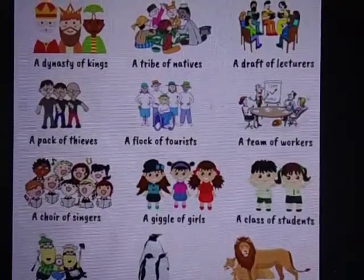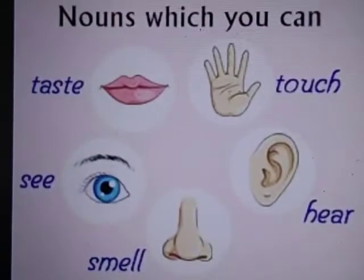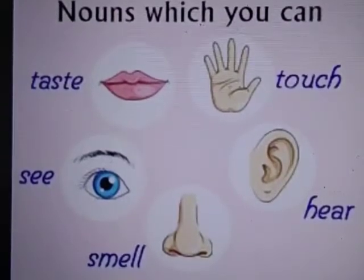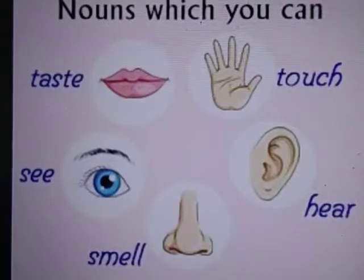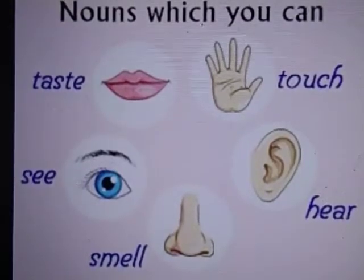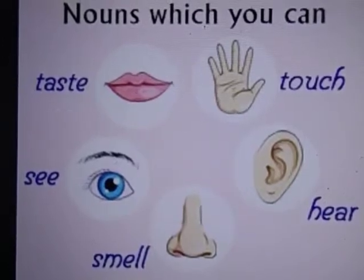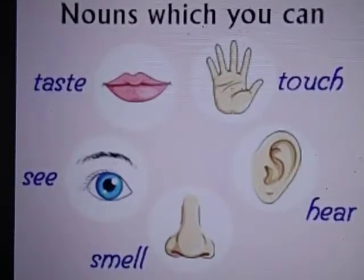Next, we can go to concrete nouns. Concrete nouns are names of those objects that we can see, touch, hear or smell. Nouns which you can taste, see, smell, hear or touch are concrete nouns. For example, cake — you can eat the cake and feel the taste of it. That is an example of a concrete noun.